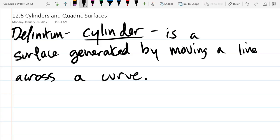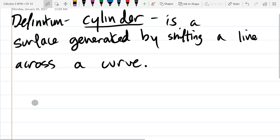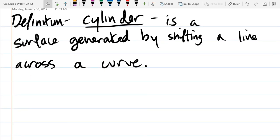So this definition is going to be different than the one you're used to. You'll be able to apply this, turn this definition into the cylinder you're thinking of pretty easily. But a cylinder is a surface generated by moving a line across a curve.